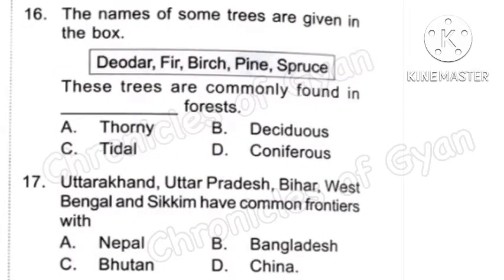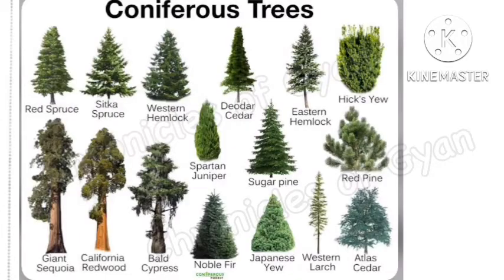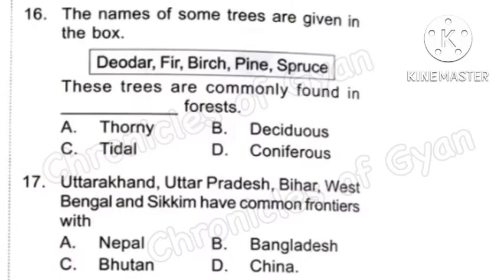Question 16: The names of some trees are given in the box. These trees are commonly found in dash forest. The correct answer is Option D, Coniferous.